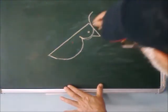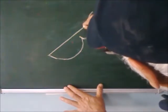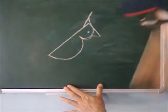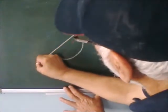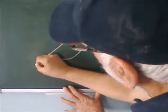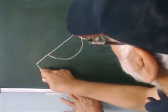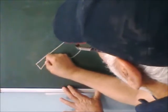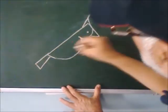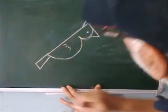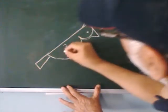Draw a curved line like this. And draw a slant line. Extend this line. Draw a short line here and an oblique line.